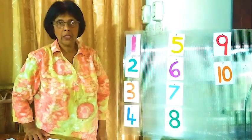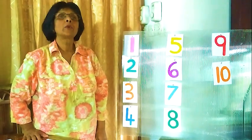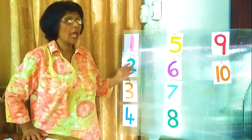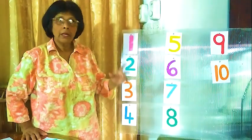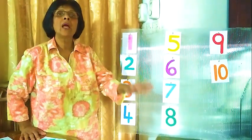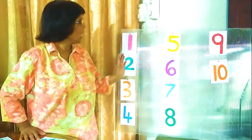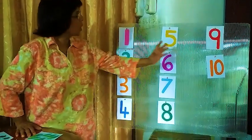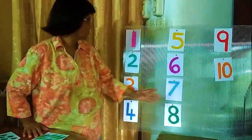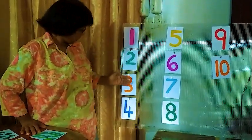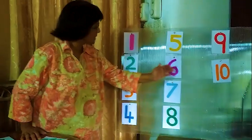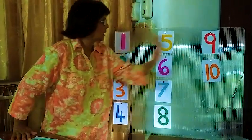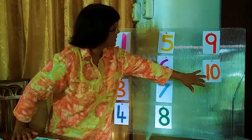Hello children. Today I am going to teach you numbers and values. Numbers and values. There are some numbers in order: 1, 2, 3, 4, 5, 6, 7, 8, 9, 10. Up to 10 numbers here.